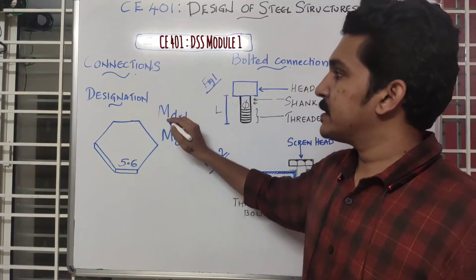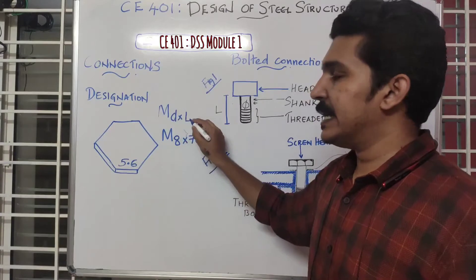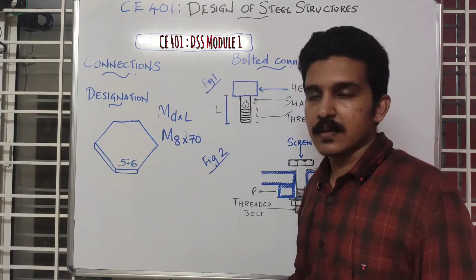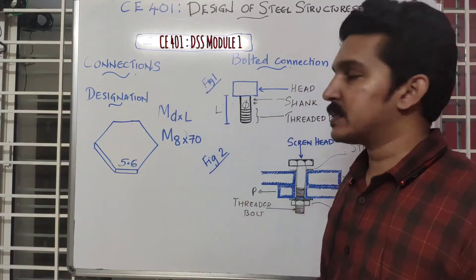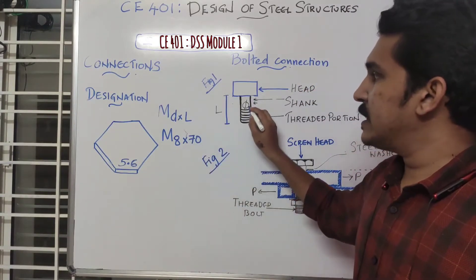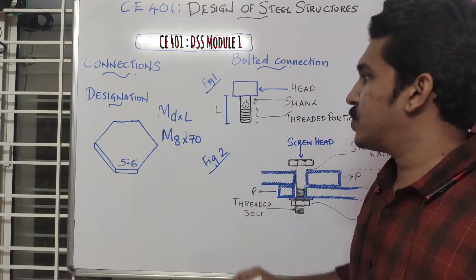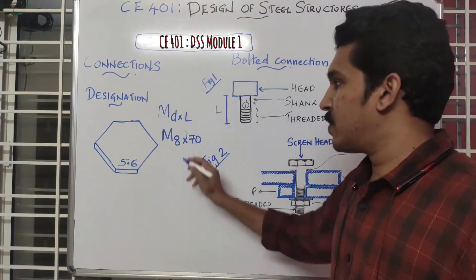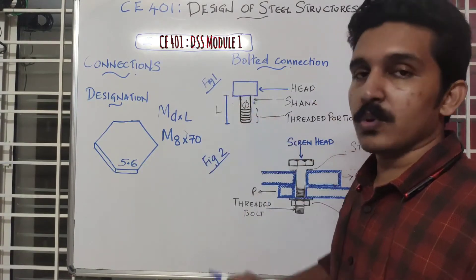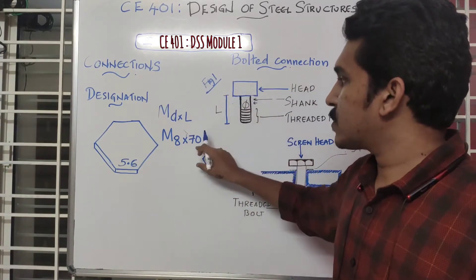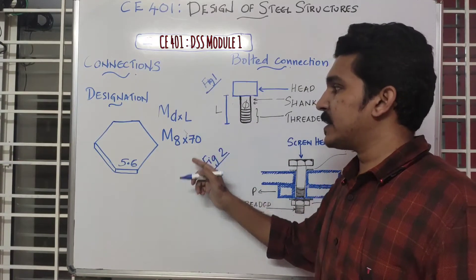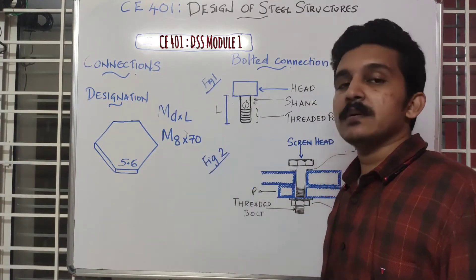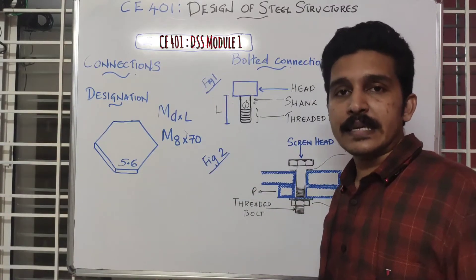A bolt can be designated by the notation M × D × L. M means metric size — in India, we follow metric size. D is the diameter of the shank, and L is the length of the bolt, both in millimeters. For example, M8 × 70 means an 8mm diameter bolt of 70mm length. That is how we designate a bolt.